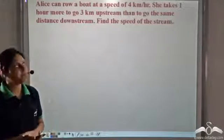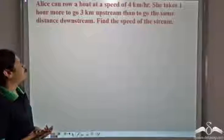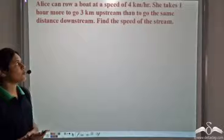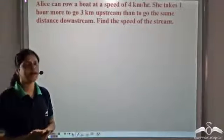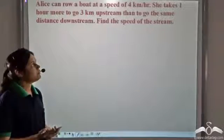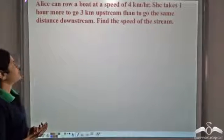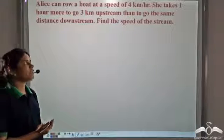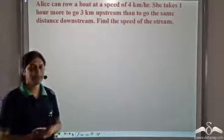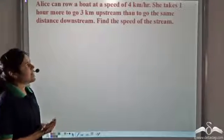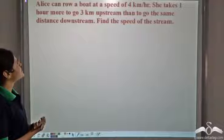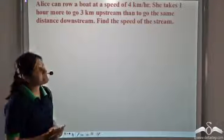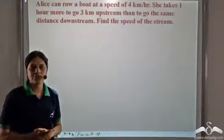We need to solve this problem. Alice can row a boat at a speed of 4 km per hour. She takes one hour more to go 3 km upstream than to go the same distance downstream. Find the speed of the stream.